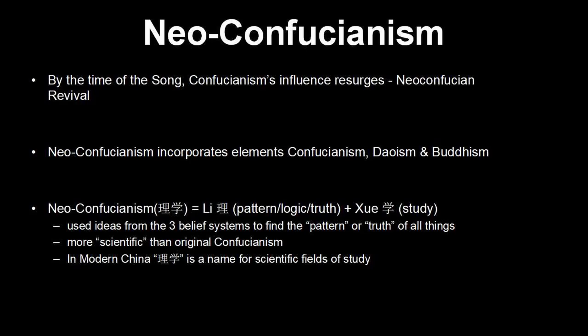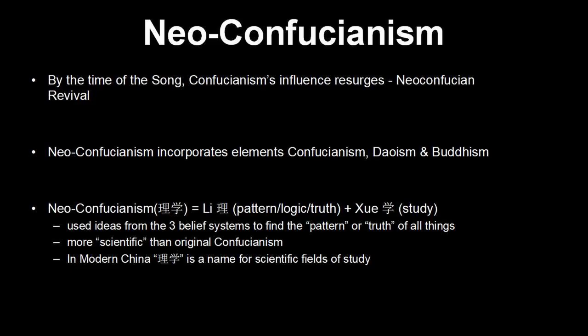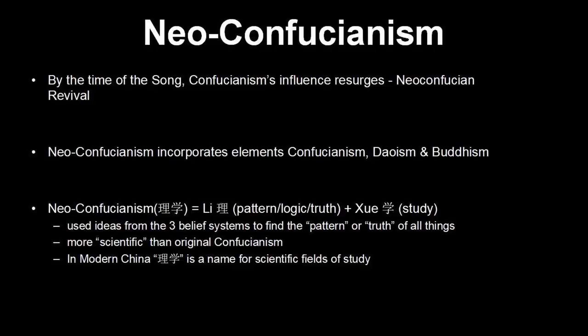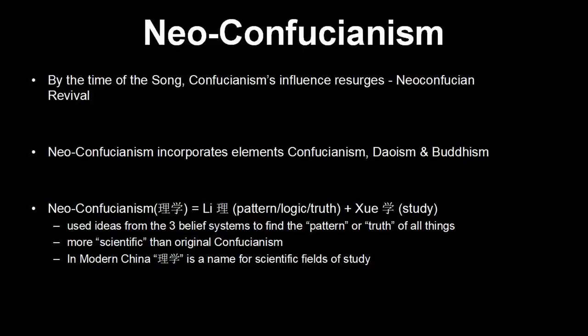Neo-Confucianism incorporates some elements of Daoism and Buddhism. What we call Neo-Confucianism, the Chinese call Li Xue — the study of Li, meaning pattern, logic, or truth. Neo-Confucianism combined these three belief systems in an attempt to find the pattern or logic or truth of all aspects of life. This included studying classic literature, philosophy, and much more so than original Confucianism, they were also studying science. In fact, Li Xue today in China is the name given for scientific studies. So people studying Neo-Confucianism were also studying scientific subjects. And yes, all of that would be included on the civil service examination, and Neo-Confucianism was also influential in Korea and Japan.